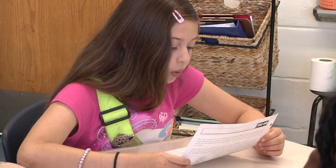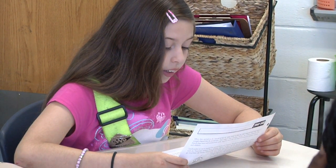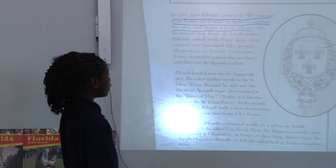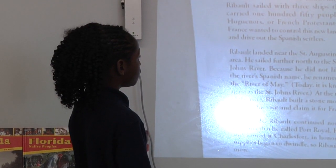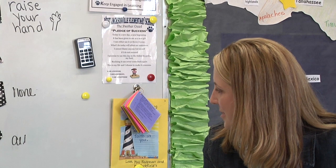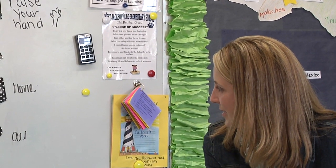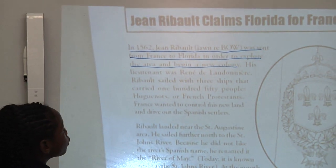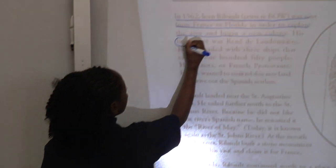Mayanna reads: 'In 1562, Jean Ribault was sent from France to Florida in order to explore the area and begin a new colony. His lieutenant was René de Laudonnière.' They give us the pronunciation at the bottom. Let me slide the article up — so he's René de Laudonnière. That's his lieutenant. Do we need to circle any words? Yes — let's circle 'lieutenant.'